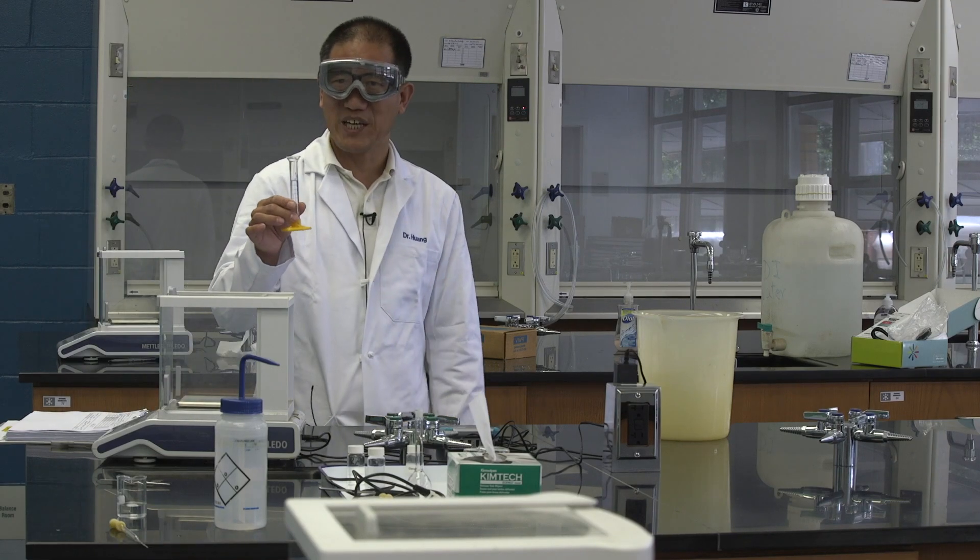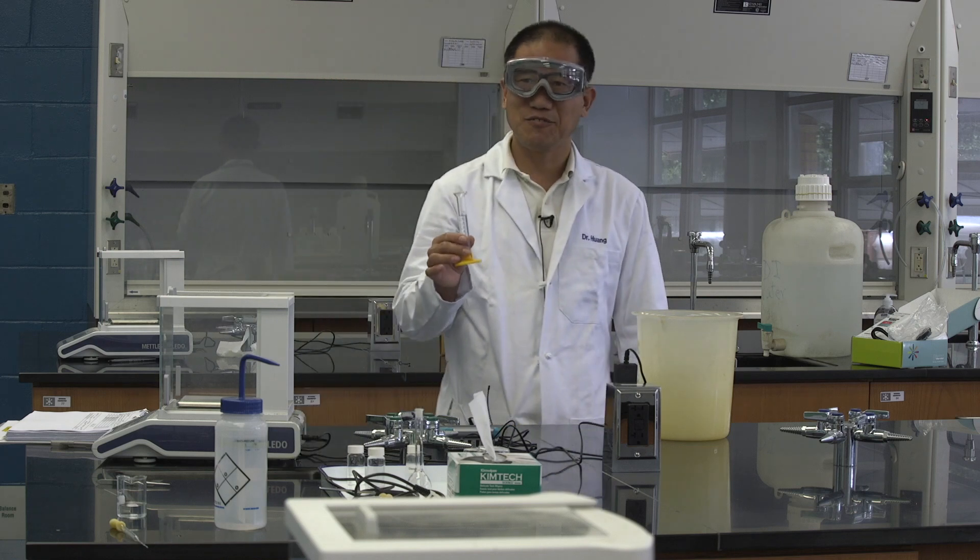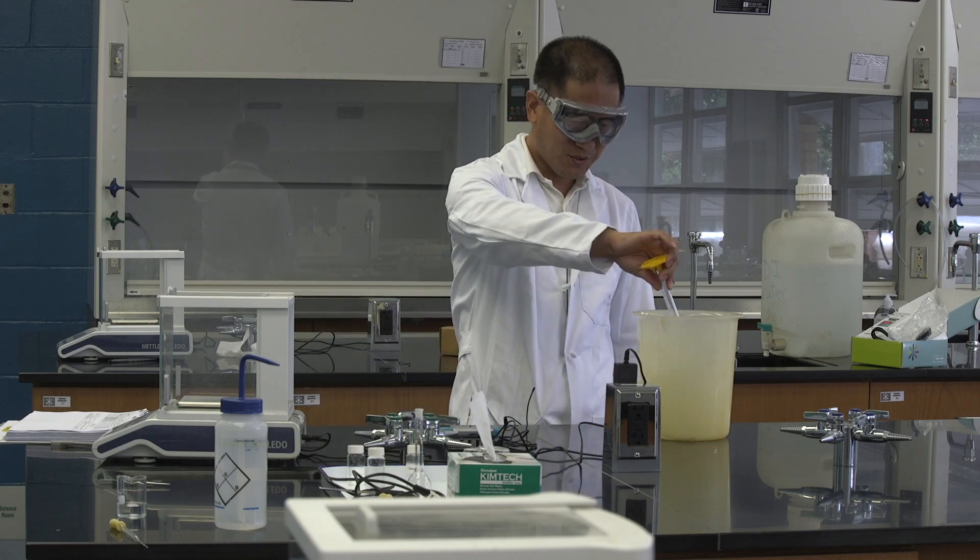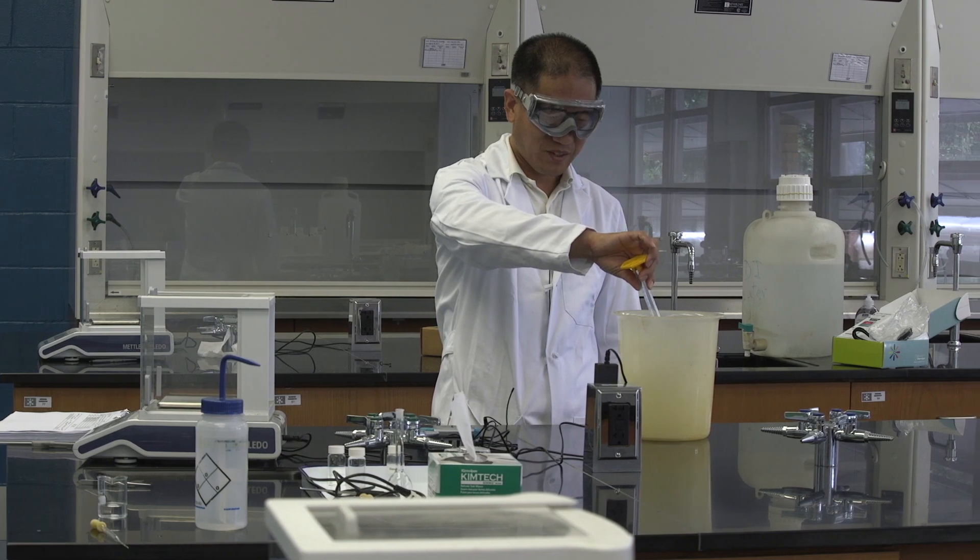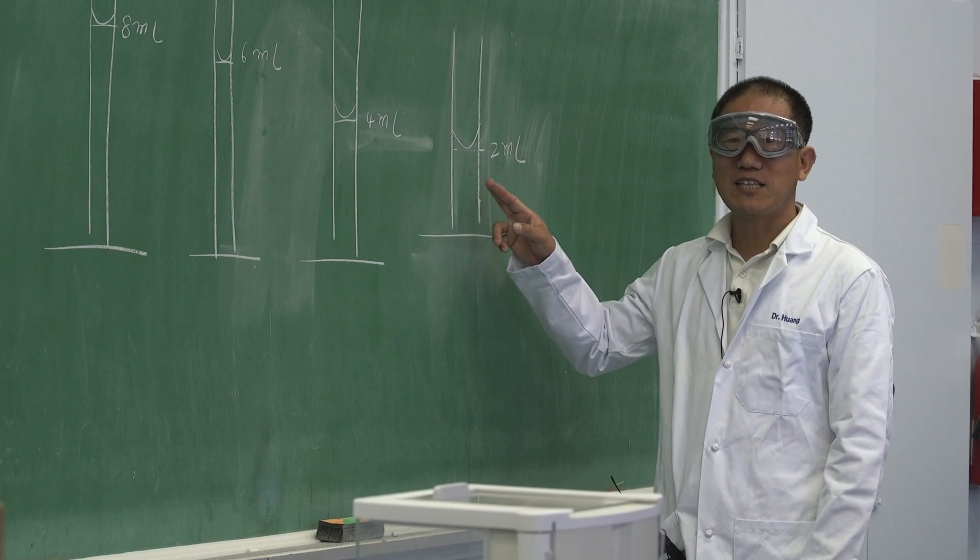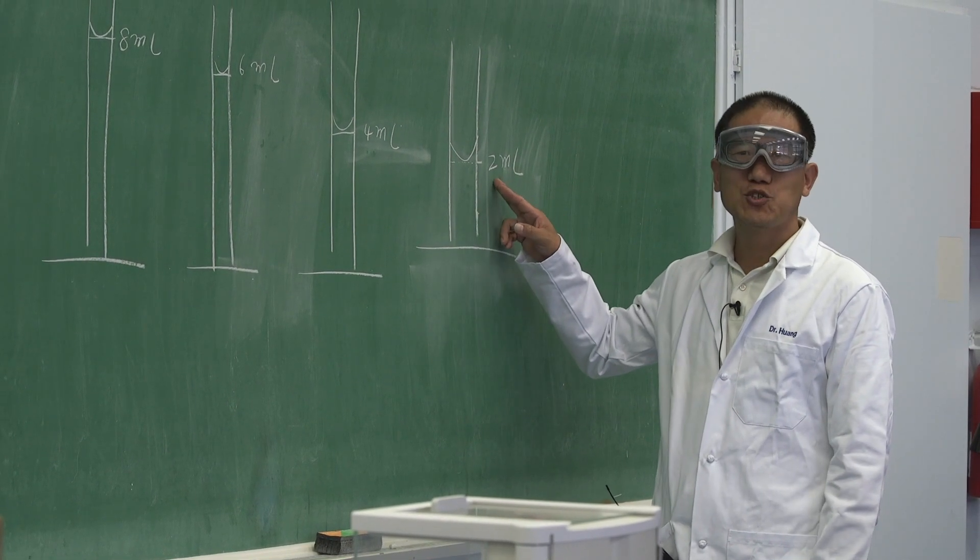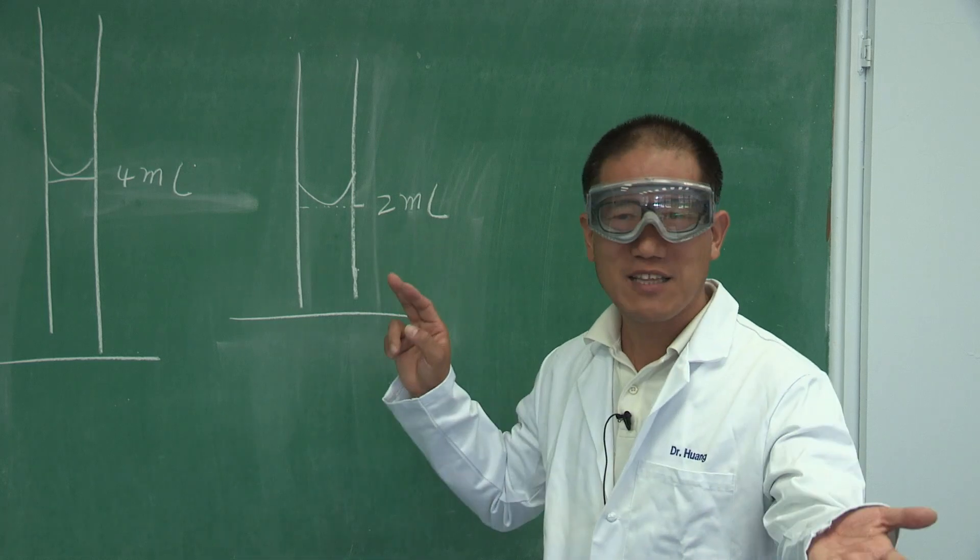For any chemical waste, including water, it has to go to the dedicated waste container. Let's do this right now. Next step, we will add unknown liquid instead of water to the same graduated cylinder. First, add to 2 milliliter mark, get the mass.